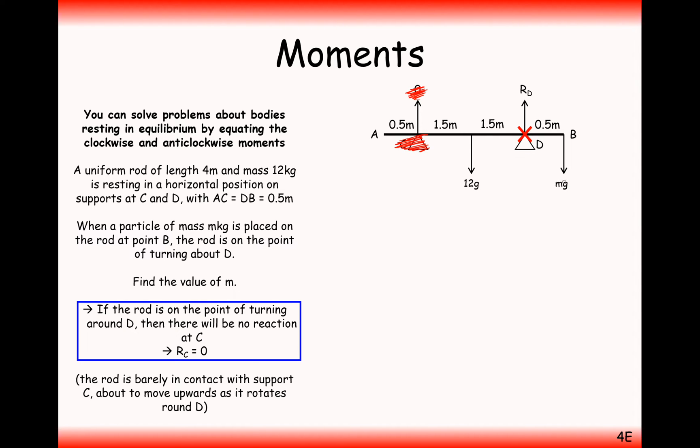If we want to now work out the value of this mass here, we're going to take moments around this point D here, using strategy number two. Clockwise moments will equal anticlockwise moments. In this case, we're going to have a moment on the anticlockwise direction of 1.5 metres times 12g, and on the right-hand side, we're going to have a clockwise moment of 0.5 times Mg. Divide by the 0.5, and we work out here that M is going to equal 36 kilograms.